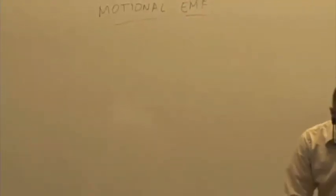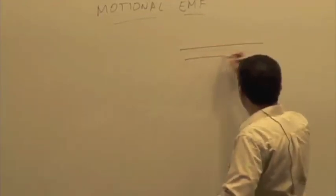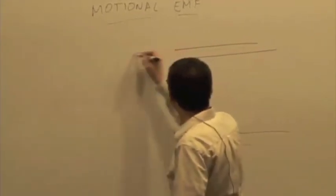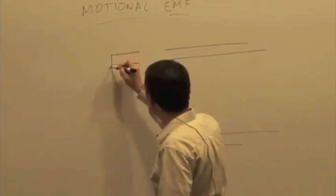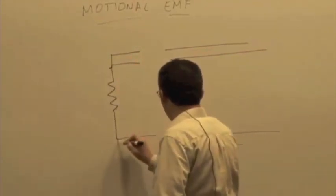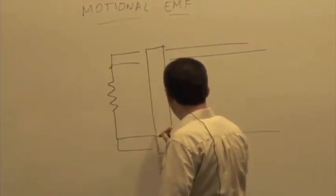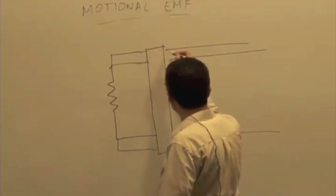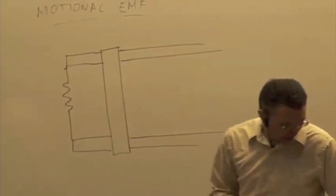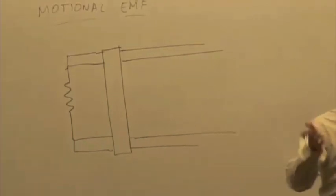Let us continue what we were talking about last time, which was on this thing we called motional EMF. And we were looking at this example where we had two metal rails connected to each other by a resistor. And there was a metal bar here.